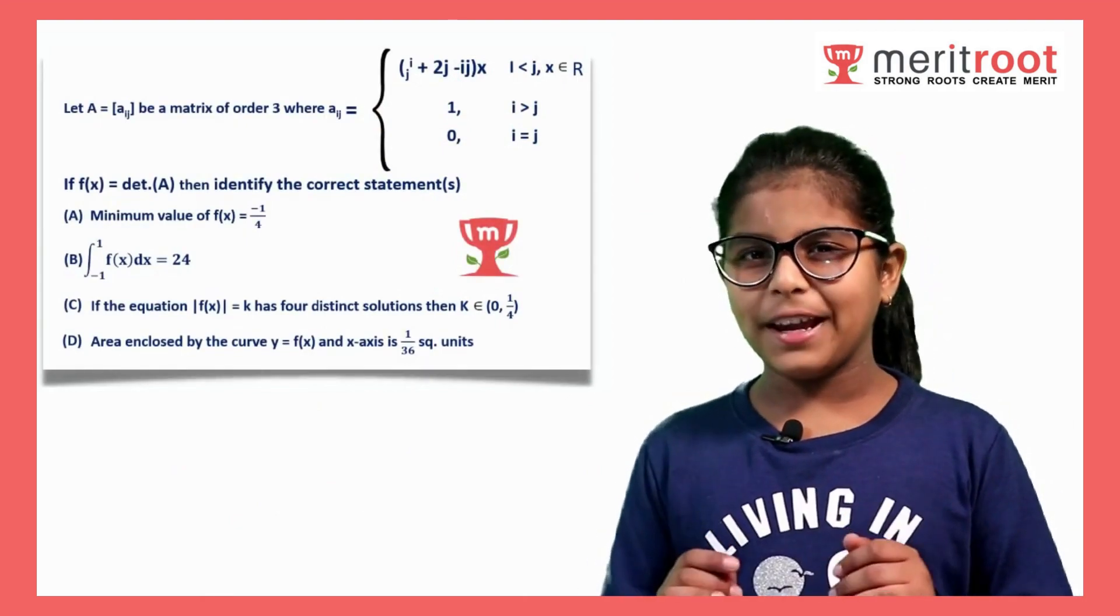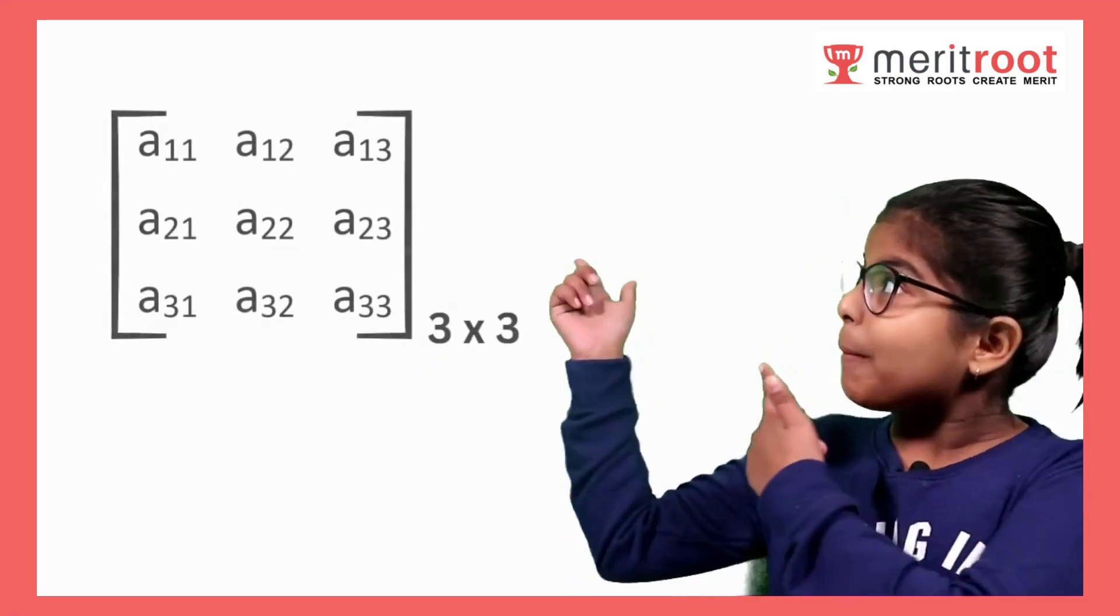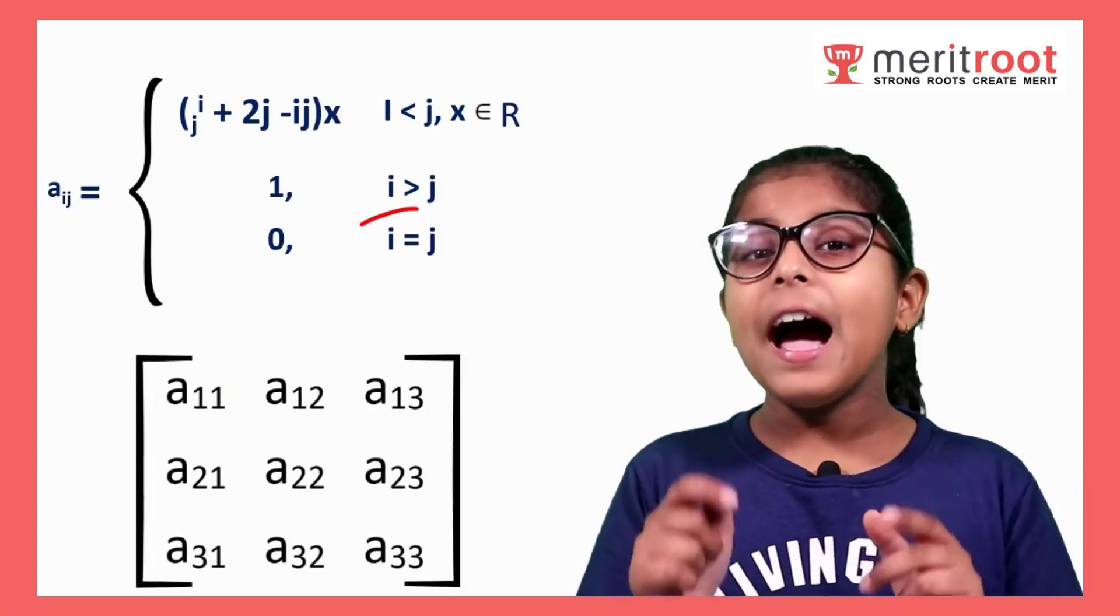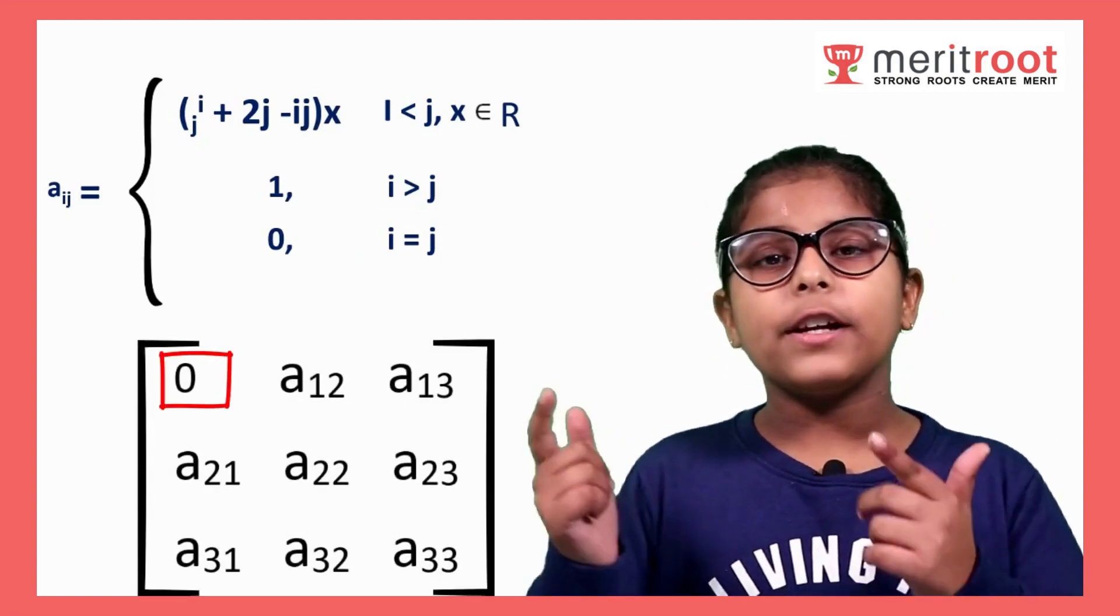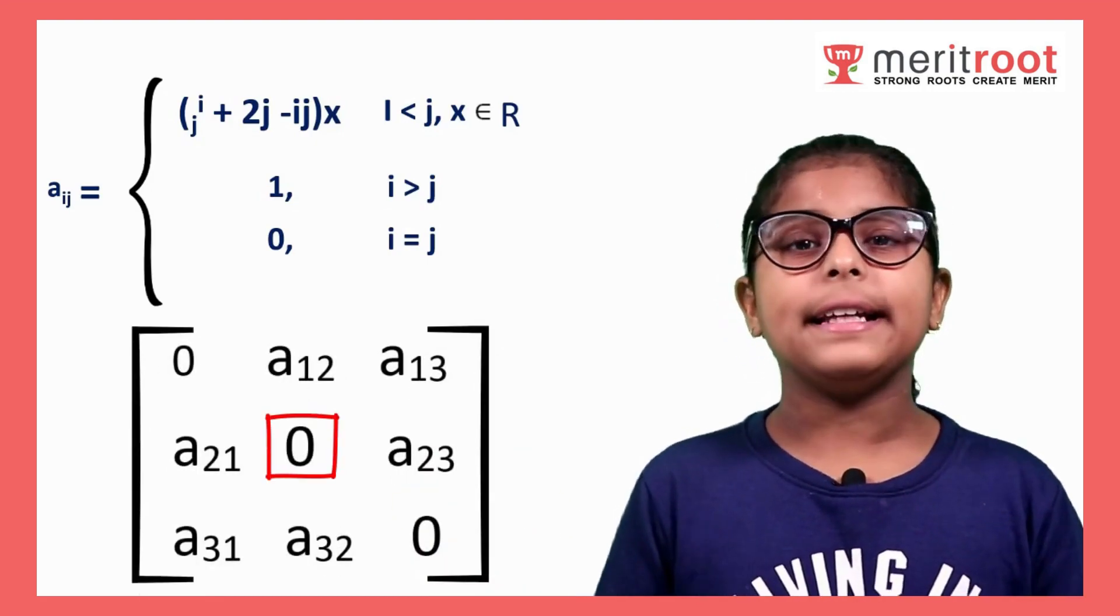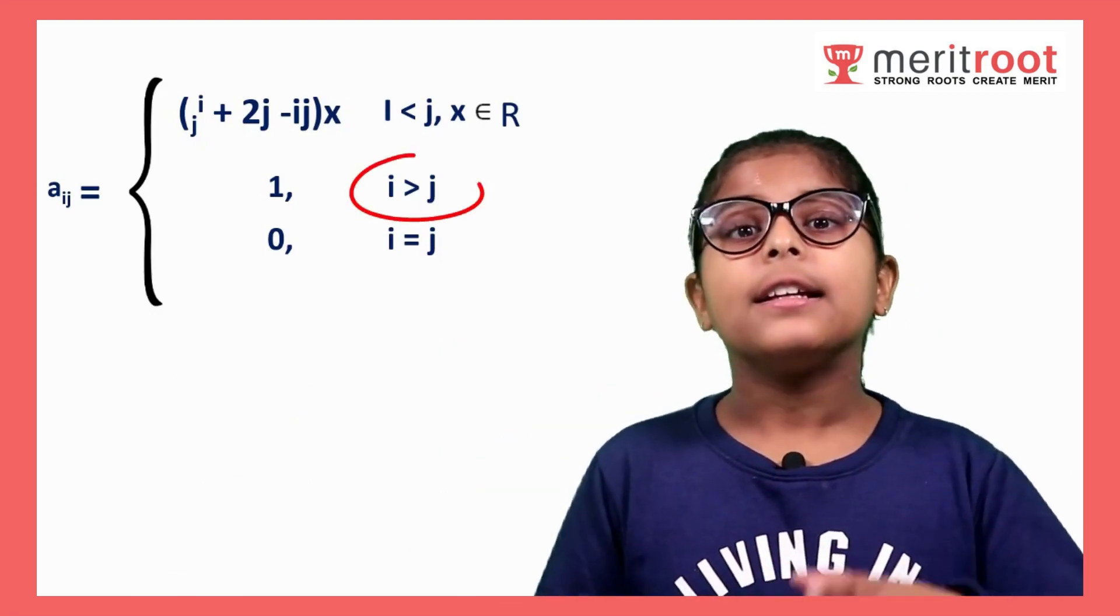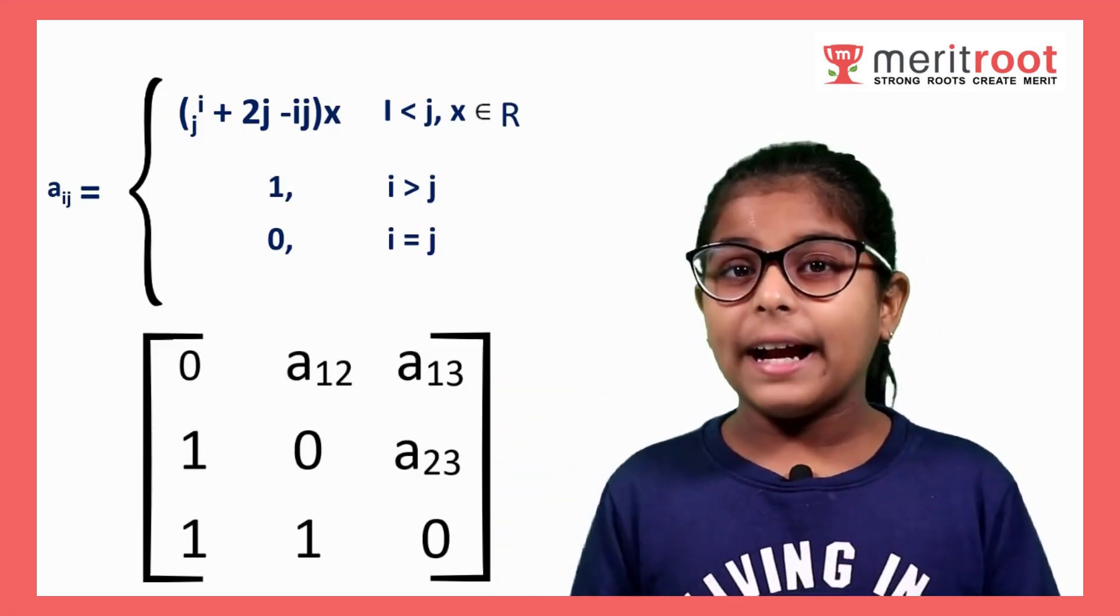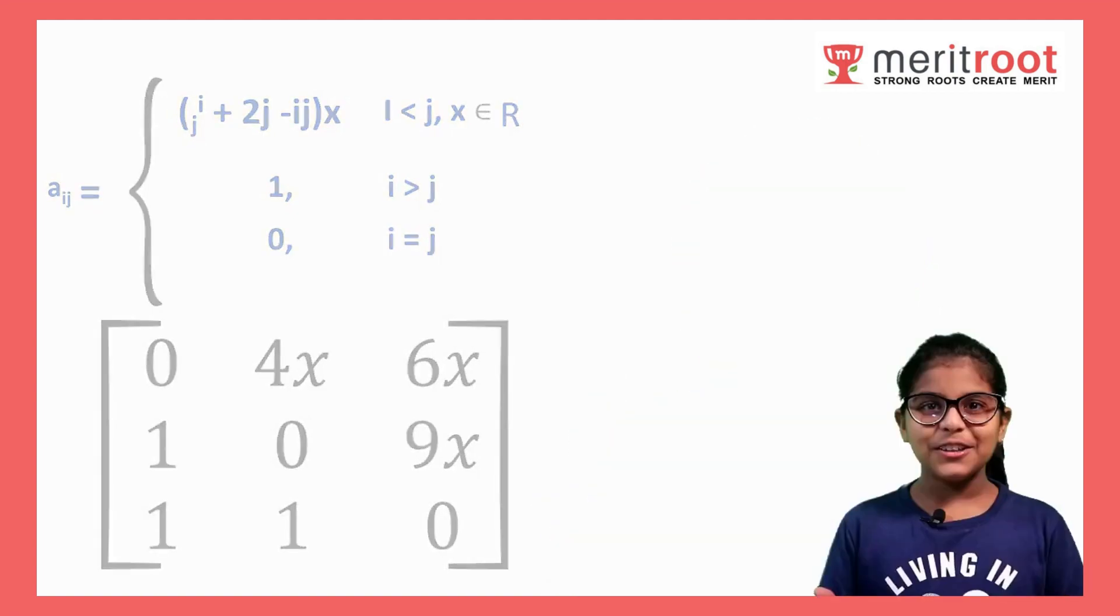First, we will make matrix by the help of given information. Let's solve this matrix together. If we see carefully A11, here I is equal to J, so we will replace it from 0 as per given conditions. And same we are getting for A22 and A33. If in matrix, I is greater than J, so we will replace it from 1. Now I hope you are getting it, so rest of the matrix you can fill yourself.